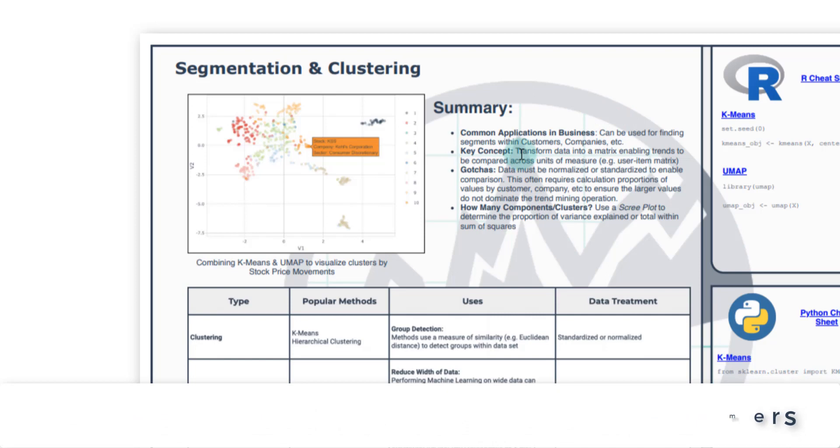The key concept here is there's a data transformation process that we'll be going through. We have to make it into a matrix that enables seeing trends that can be compared across units of measure that are standardized. We call this a user-item matrix, but basically we have to make the data into a matrix that lends itself well to this type of analysis.